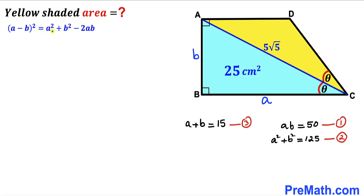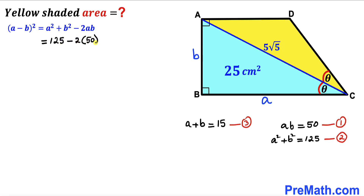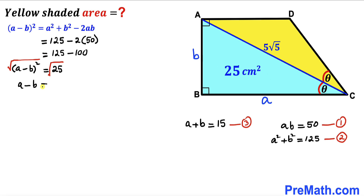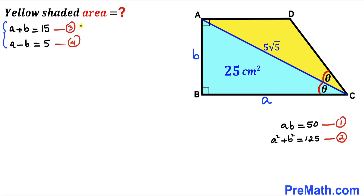Using the identity (a − b)² = a² + b² − 2ab, we substitute again: (a − b)² = 125 − 2(50) = 25. Taking the square root gives a − b = 5. Call this Equation 4.